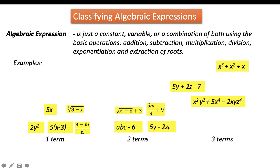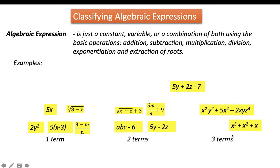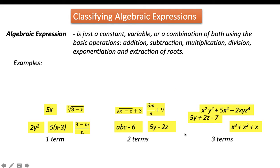While x squared y squared plus 5x to the fourth power minus 2xyz to the fourth power is considered as a three-term algebraic expression, along with x cubed plus x squared plus x, and 5y plus 2z minus 7.